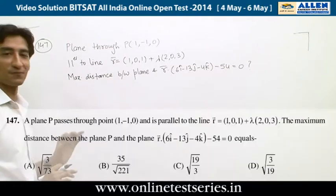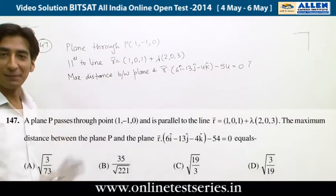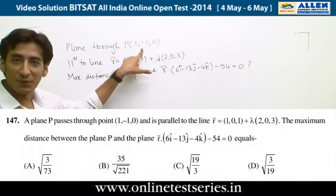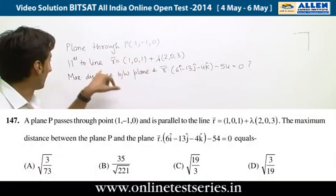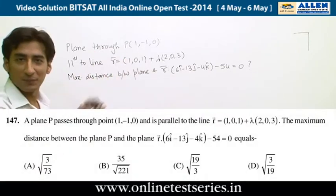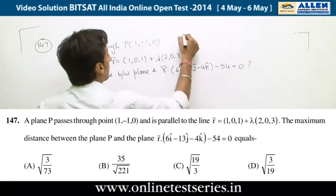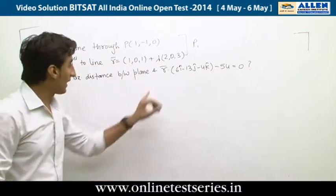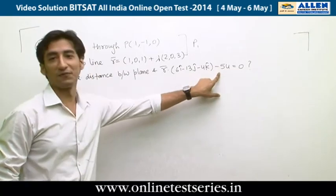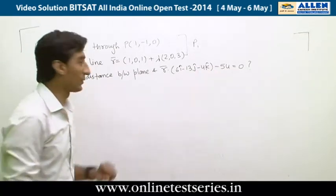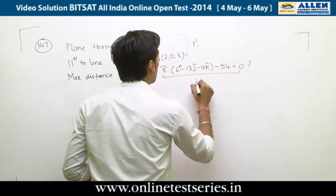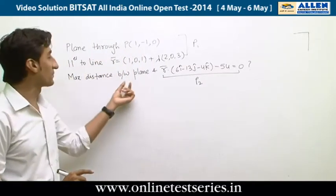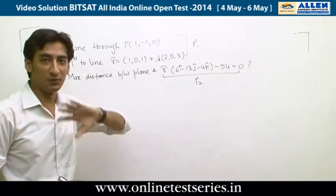Question 147 is from the topic three-dimensional geometry. It is given that a plane passes through a point and is parallel to a line. This is plane P1, and there is another plane r dot n minus 54 equals 0, which we call P2. We need to find the maximum distance between planes P1 and P2.